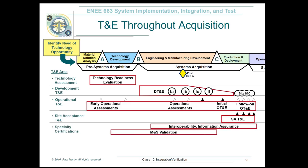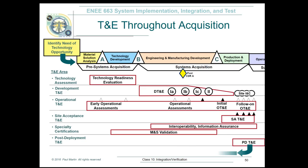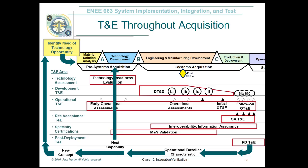There may be other certifications you need, like modeling/simulation, interoperability, or information assurance — which is a fairly big one for DOD. Most systems have information assurance as a key performance parameter because you want to ensure your information is secure and that it interoperates with other systems that have been fielded. After you've actually deployed it, you may have test and evaluations to verify it was deployed correctly. If it's not working the way you need or there's not enough capability, you may filter all the way back around, come up with a new concept, identify a new need, and go through the development process again.